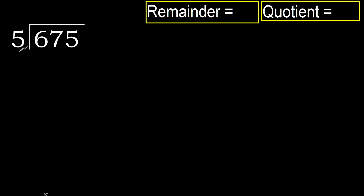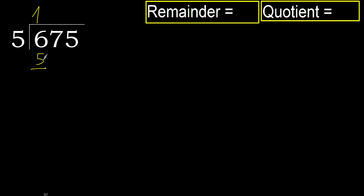675 divided by 5. 6 is not less, so we work with 6. 5 multiplied by which number is nearest to 6 but not greater? 5 multiplied by 2 is 10 — 10 is greater. 5 multiplied by 1 is 5 — 5 is not greater. 6 minus 5 is 1.